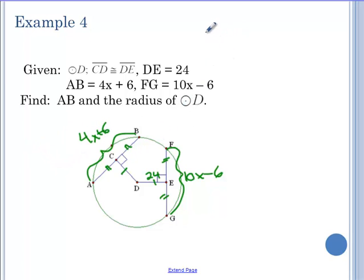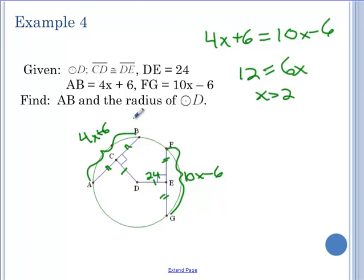So these two chords are congruent. 4x plus 6 equals 10x minus 6, because the distance to the center is congruent. So subtract 4x. Add 6. 12 equals 6x. X is 2. So when I go to plug in 2, 8 plus 6, this chord is 14. This chord is also 14, 20 minus 6. So AB is equal to 14.